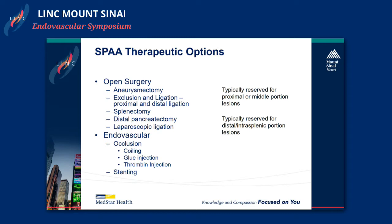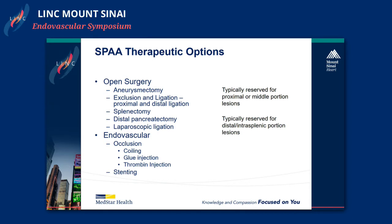There are many open and endovascular options. The spleen really tolerates ligation relatively well. You can exclude, ligate, do a splenectomy, distal pancreatectomy, or laparoscopic ligation. I think most of us really prefer doing them endovascularly if possible. That can be either coiling, glue injection, thrombin, Onyx, or potentially putting in a covered stent, although that may be a little bit more challenging due to the tortuosity.